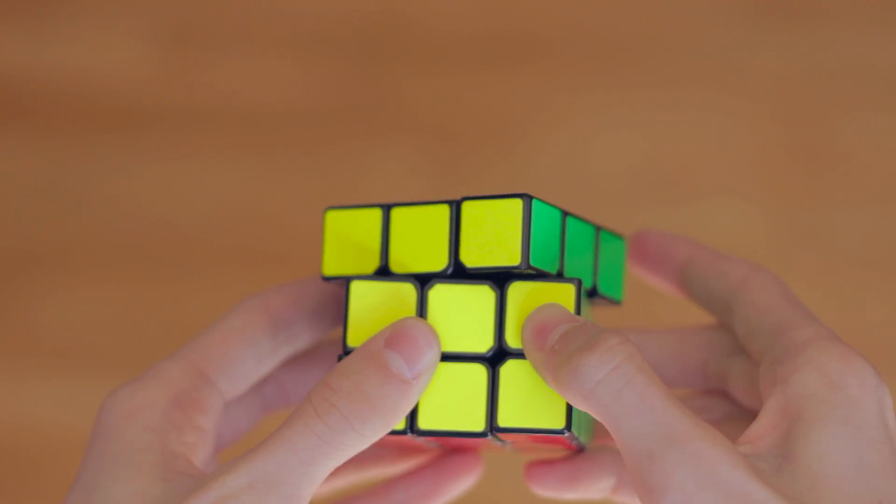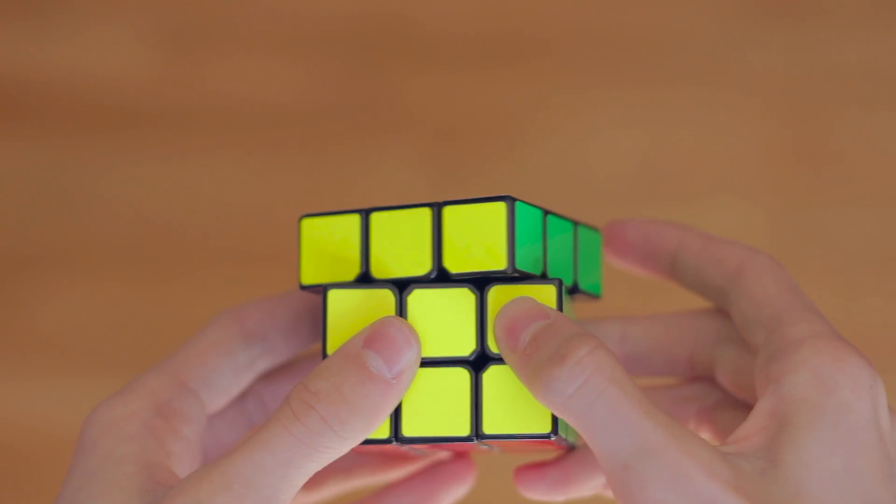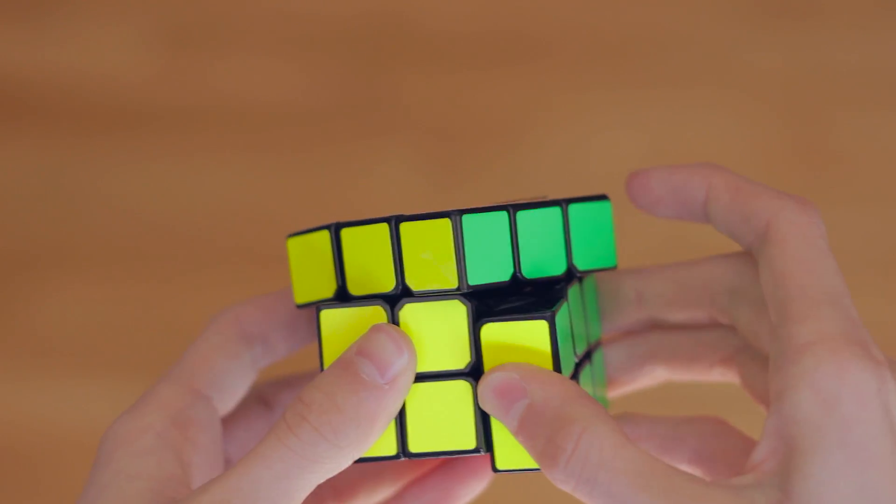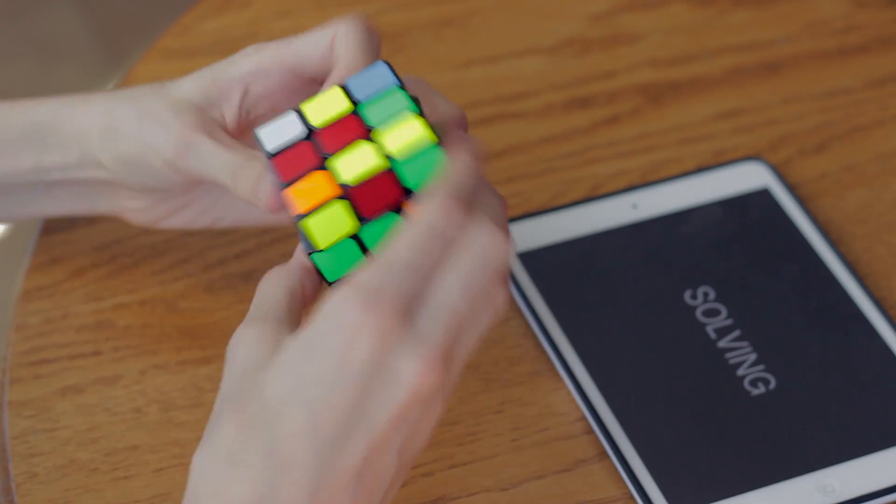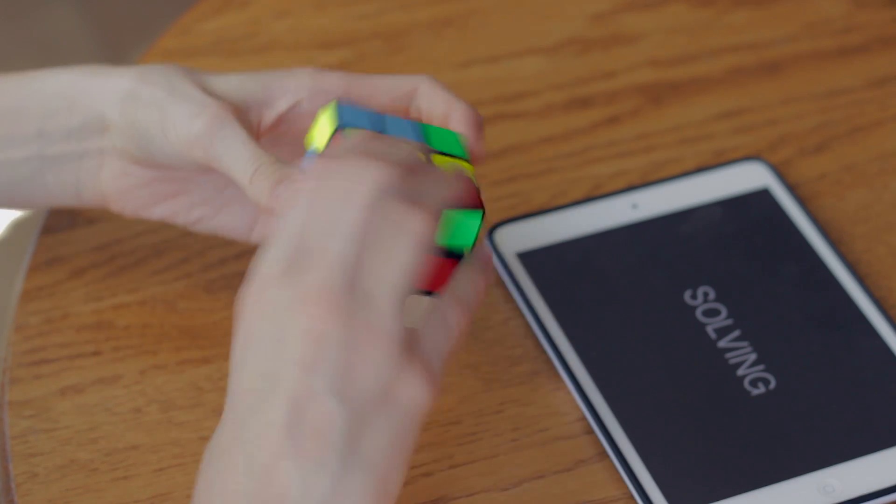Reverse corner cutting is where the cube begins to disappoint. It can only reverse cut about half a cubie and even this requires a notable amount of force. While this is not particularly bad, it doesn't quite reach the cube's full potential. Cubes such as the Gans 356 and 357 and Guoguan Yuexiao easily exceed the Zanchi in corner cutting.